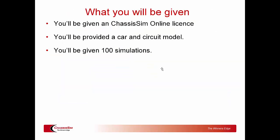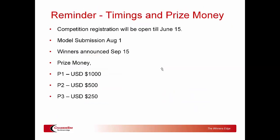Here's a final reminder of the timings and prize money. Competition registration is open until approximately June 15th — if we get more interest I may extend that into July. Model submission is August 1st, and winners will be announced September 15th. This is a competition with some teeth to it — there is prize money on the table: P1 is USD $1,000, P2 is USD $500, and P3 is $250. To wrap up: for those already entered, I hope you found this helpful. For those who haven't entered yet, give it a go, have some fun, and we'll catch you in the next ChassisSim video tutorial.